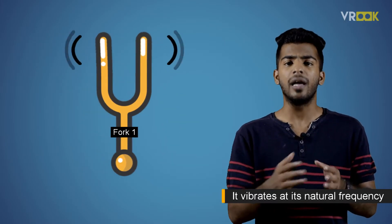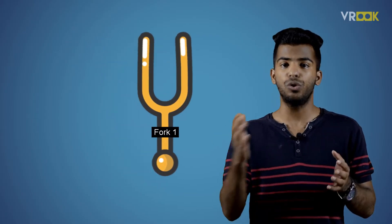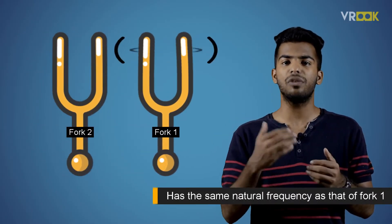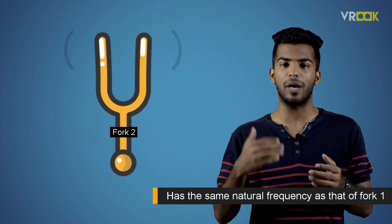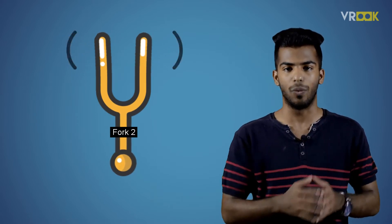Now, if we bring another tuning fork, fork 2, which has the same natural frequency as that of fork 1, the fork 2 starts vibrating due to the influence of fork 1.